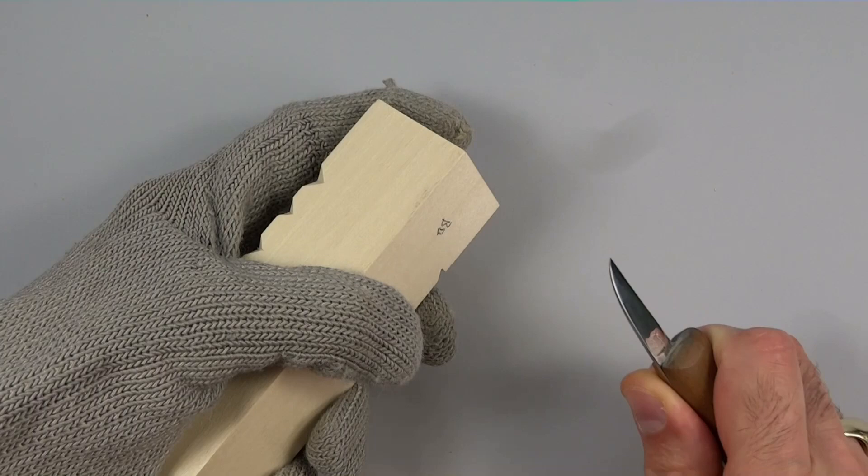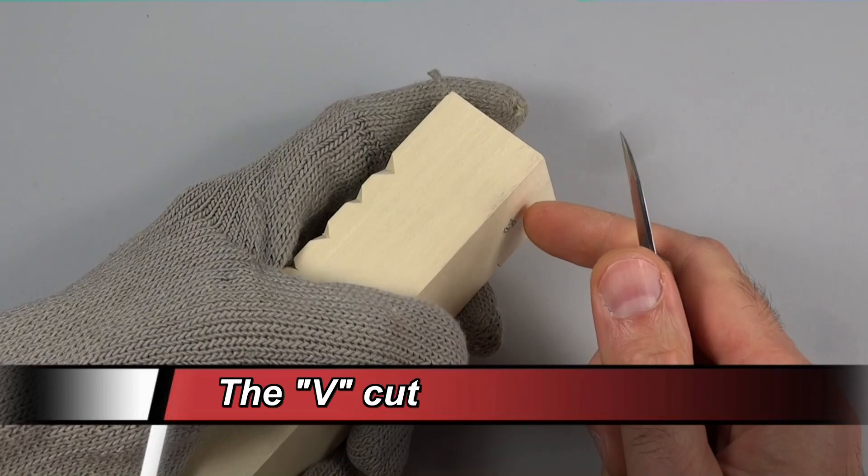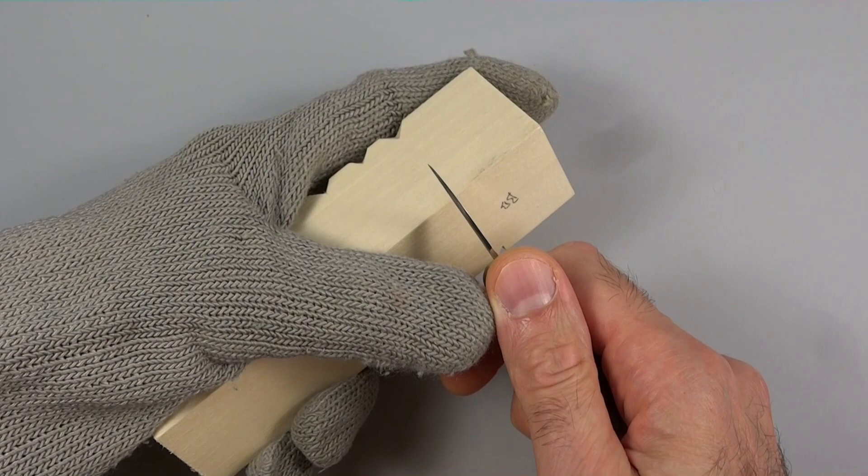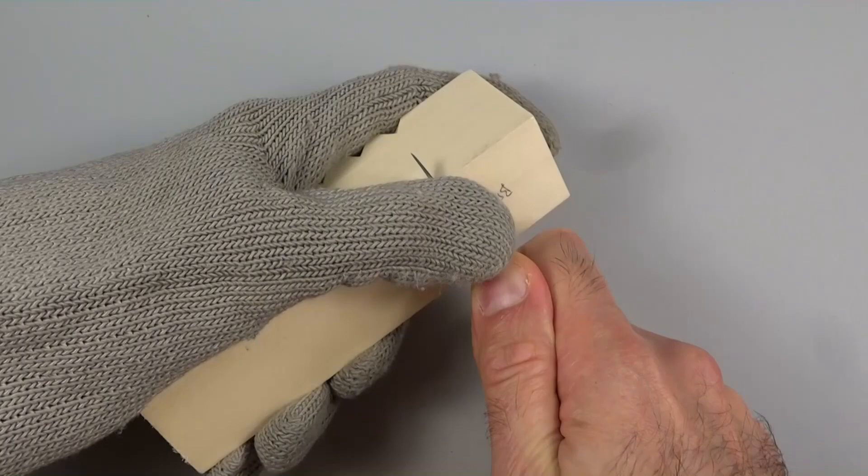The third cut I would like to discuss is the V cut. Now there are two techniques. This is the first technique. Taking your knife, holding it 90 degrees to the wood, we're going to make a stop cut.